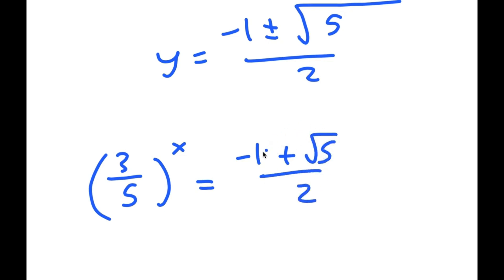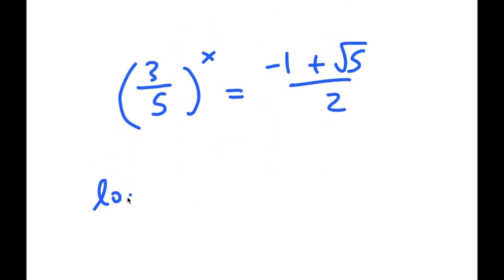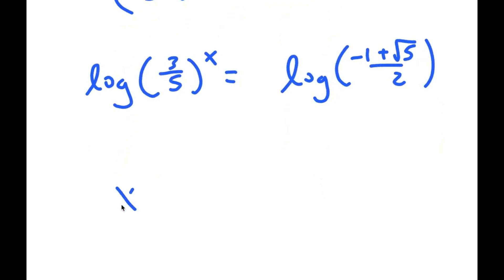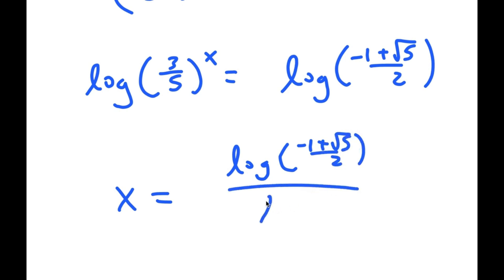The reason why negative 1 minus the square root of 5 over 2 doesn't work is because that's negative, and you can't take the power of a positive number and make it equal negative. So from here, if I take the log on both sides, I get log of 3 over 5 to the power of x is equal to log of negative 1 plus the square root of 5 over 2. So I get x is equal to log of negative 1 plus the square root of 5 over 2 over log of 3 over 5. So this is my solution.